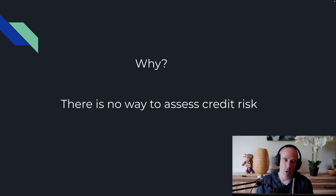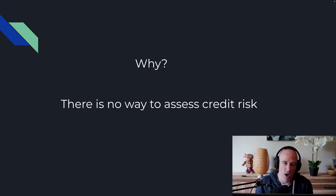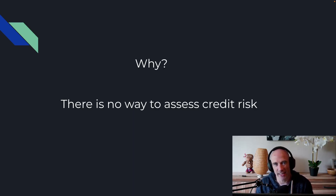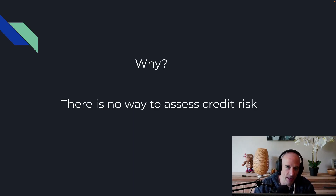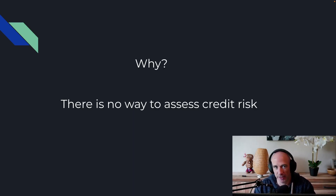For a credit, for a loan, there are two important things. First, a way to assess credit risk - how risky is this borrower? And based on the risk, they provide you with an interest rate. The higher risk you have as a borrower, the higher the interest rate you're going to pay. And if you're a low risk borrower, the less interest you pay. That makes a lot of sense. But in blockchain, in DeFi, there is no way to assess credit risk. So you need to provide collateral.